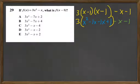Let's not forget that we have to take 3 times what's in parentheses there. And that ends up being 3x squared minus 6x plus 3.